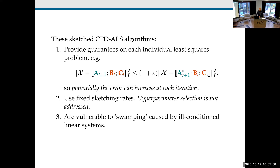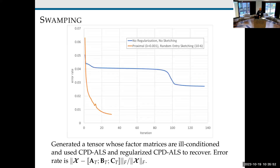Another issue is that, as we saw in one of the talks this morning, swamping can be caused by ill-conditioned linear systems that come up in the process of getting these low-rank decompositions. Here's an example of swamping — it looks exactly like what we saw this morning. We're using regular CPD-ALS and a regularized CPD-ALS to recover factor matrices of a tensor where the factor matrices are ill-conditioned, meaning the columns of the factors are nearly collinear.